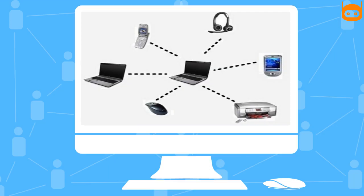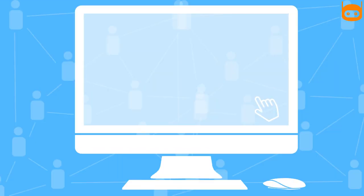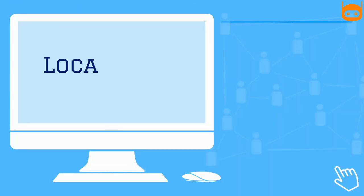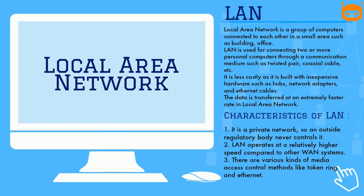PAN is a computer network formed around a person. It generally consists of a computer, mobile, or personal digital assistant. PAN can be used for establishing communication among personal devices and for connecting to a digital network and the internet. Personal Area Network covers an area of 30 feet.